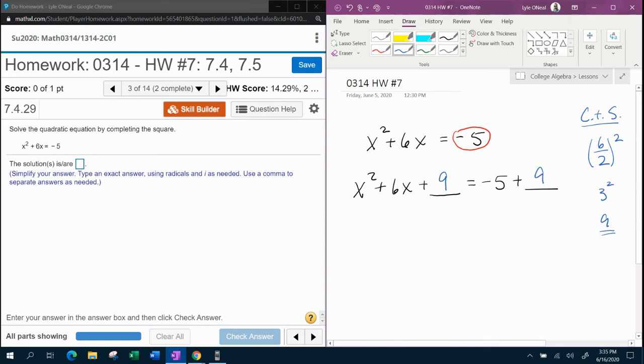So do you see the completing the square process? You take the value of b, or you could say the coefficient of x. You take half of it, and then whatever you get, you square it. And then that's the number you add to both sides.